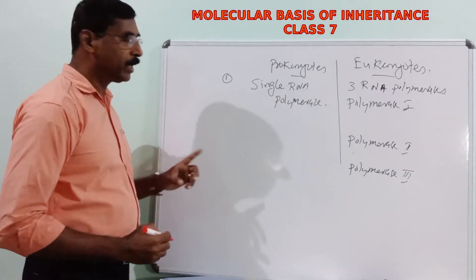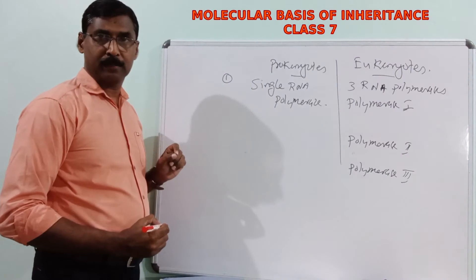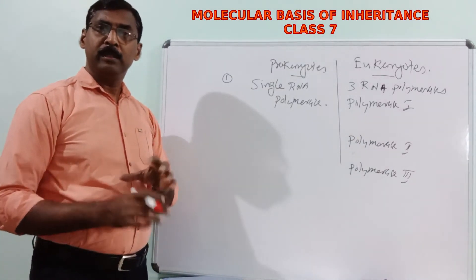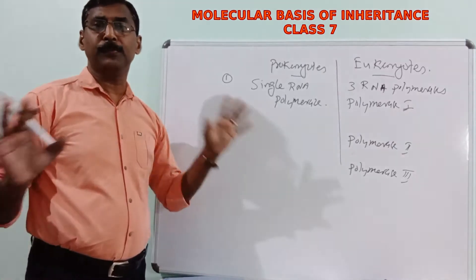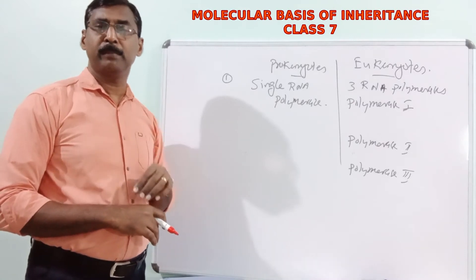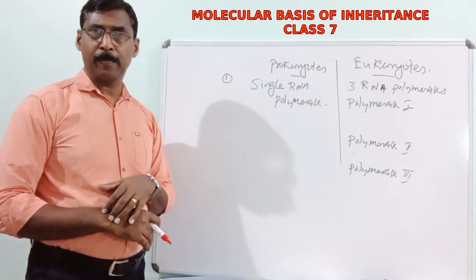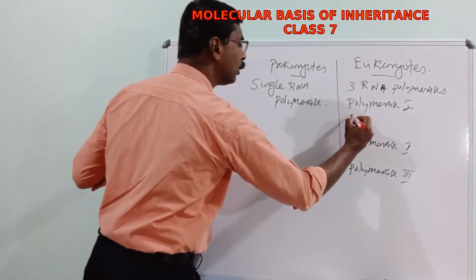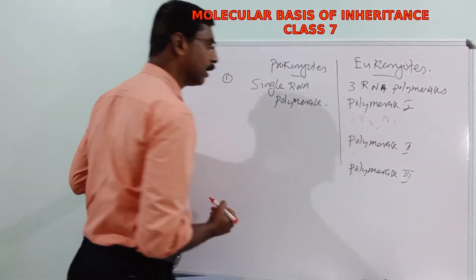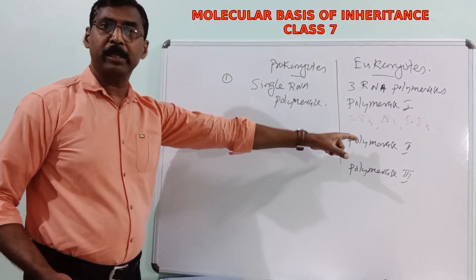Polymerase 1 polymerizes ribosomal RNAs. Based on the sedimentation coefficient, rRNAs are classified into various categories. Polymerase 1 transcribes 28S rRNA, 18S rRNA, and 5.8S rRNA. The 'S' stands for the sedimentation rate when centrifuged.